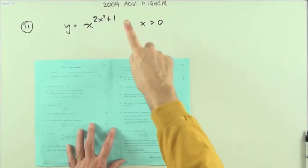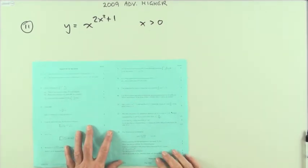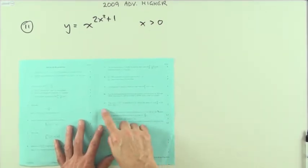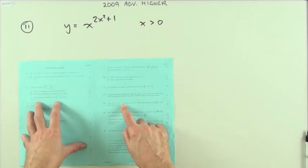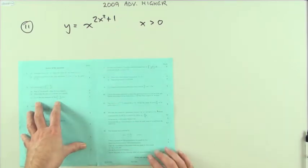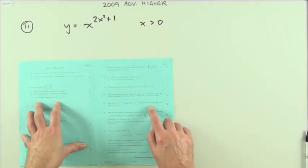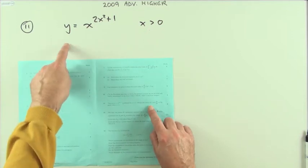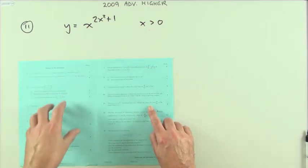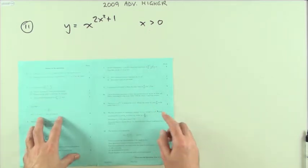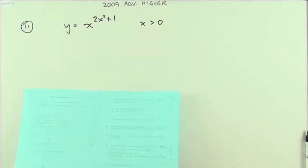Number 11 from the 2009 Advanced Higher. What have we got here? The curve, and there's its expression — notice you've got an exponential type function there. You have to obtain the values of y and the derivative of y with respect to x when x equals 1.